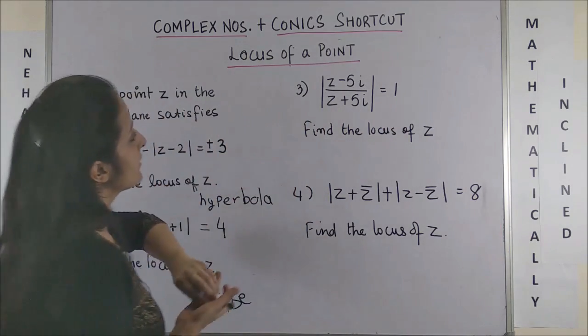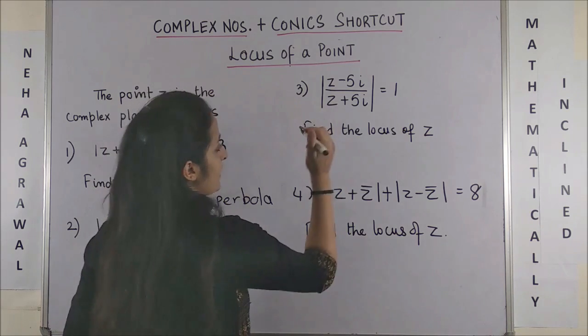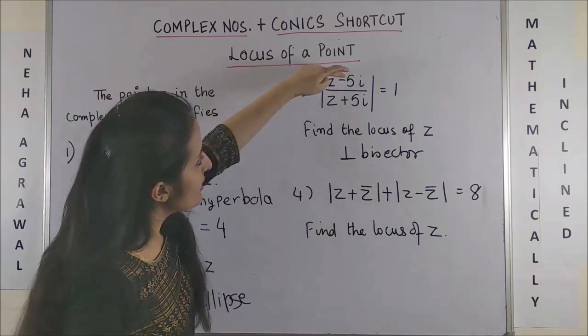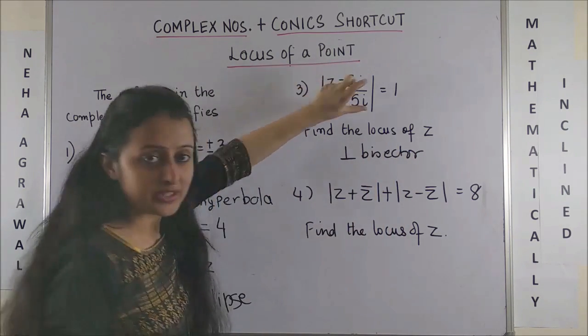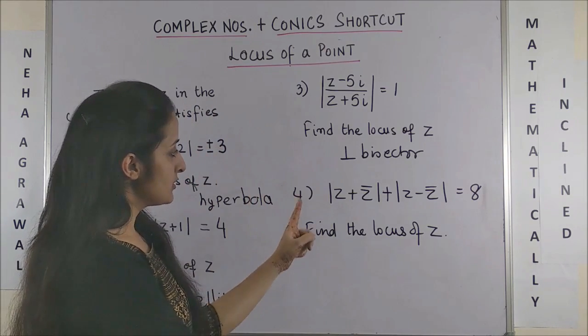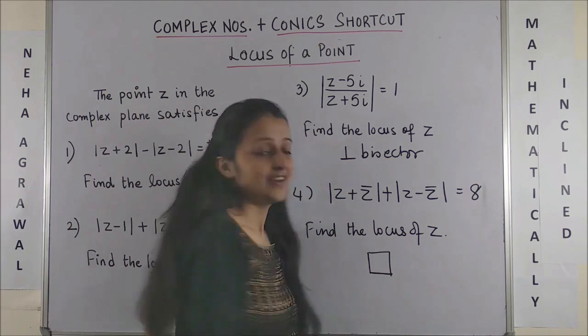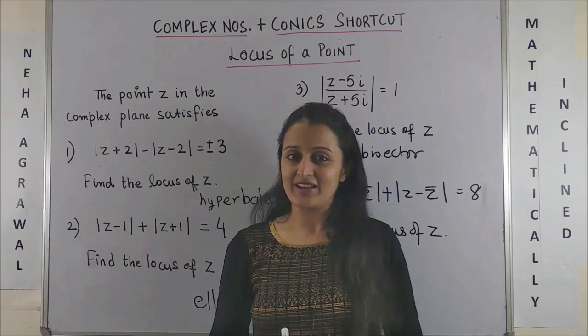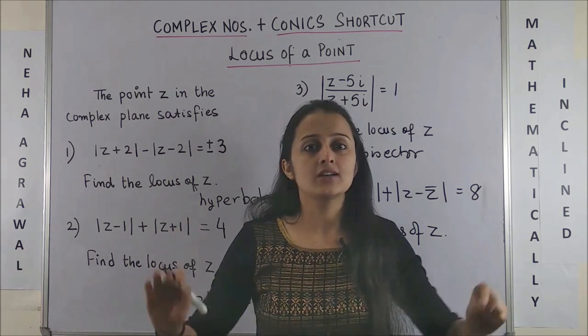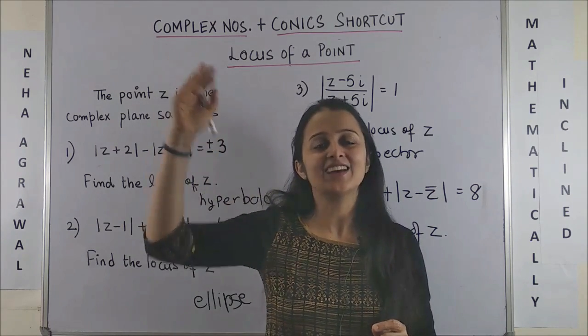Coming to this one, the locus should be the perpendicular bisector between the points joining minus 5 iota and 5 iota. And for the fourth one, the locus should be simply a square. Yes, it is this simple to identify. Stay tuned till the end of this video as I discuss a lot of questions and the level of the questions keeps going higher and higher.